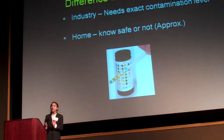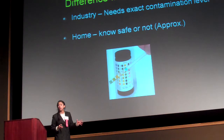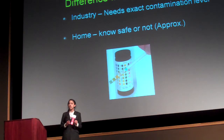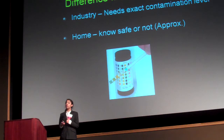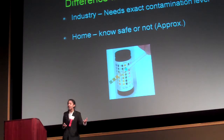The main difference between an industry test and a home test is that in the industry, they want to detect precise levels of endotoxin. At home, we just want to know if we can eat our salad or not — safe or unsafe. It's very similar to a pregnancy test.